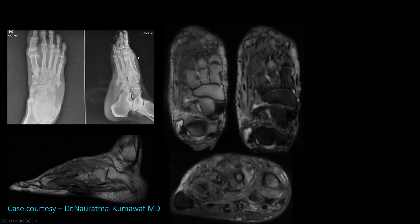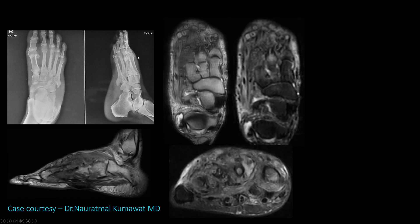You can see there is sclerosis and irregularity of the metatarsals, with bony erosions, but absence of soft tissue swelling over the foot. The patient was referred for MRI. On MRI, there is irregular sinus tract thickening, marrow edema in the bones, and a hypointense central area surrounded by a peripheral hyperintense rim.